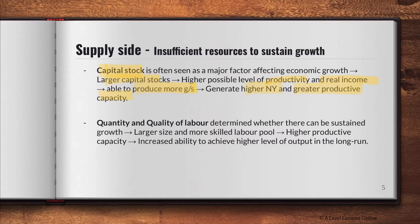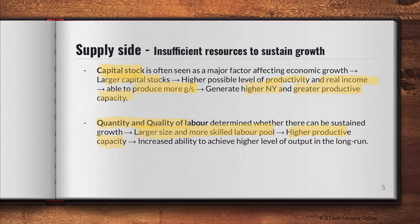When your capital increases, it causes your productive capacity to increase as well, because you have more resources and technology to exploit, allowing your total output to increase. This causes a rise in your real GDP — think of it as your curve shifting rightwards. Another factor is the quantity and quality of labor. When there is an increase in the overall skill level of your labor pool, there will be higher productivity and greater productive capacity, leading to higher national output and higher national income — hence economic growth.